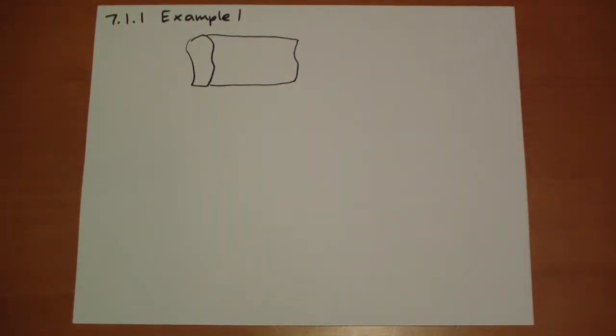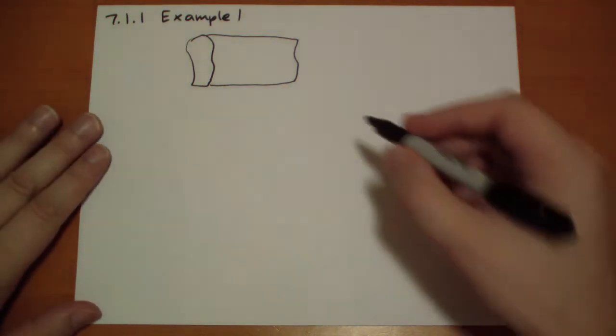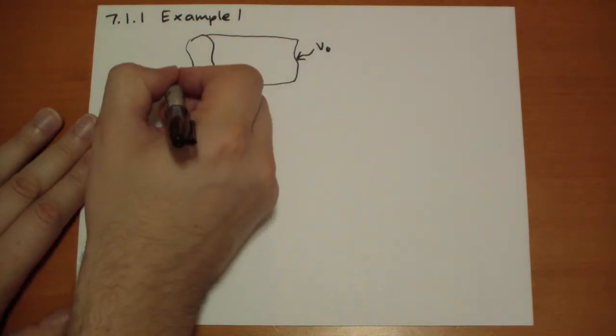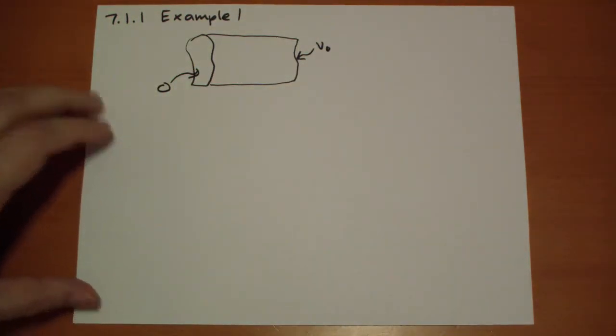And we are going to place this between two charged plates. Well, let's just pretend that over here we have a potential of V0 and over here we have a potential of 0. And the question is, how does the current that flows through this material relate to the conductivity of the material and the potential?